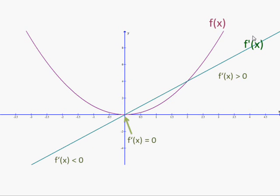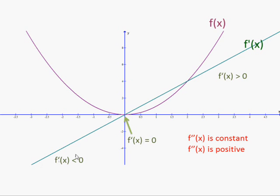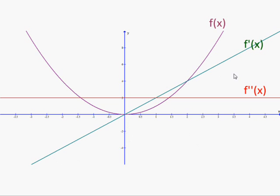Let's think about the second derivative. Well, this is a straight line, so the second derivative is constant. It's got the same gradient and it's positive, because it's rising from left to right. So the second derivative would look like that.